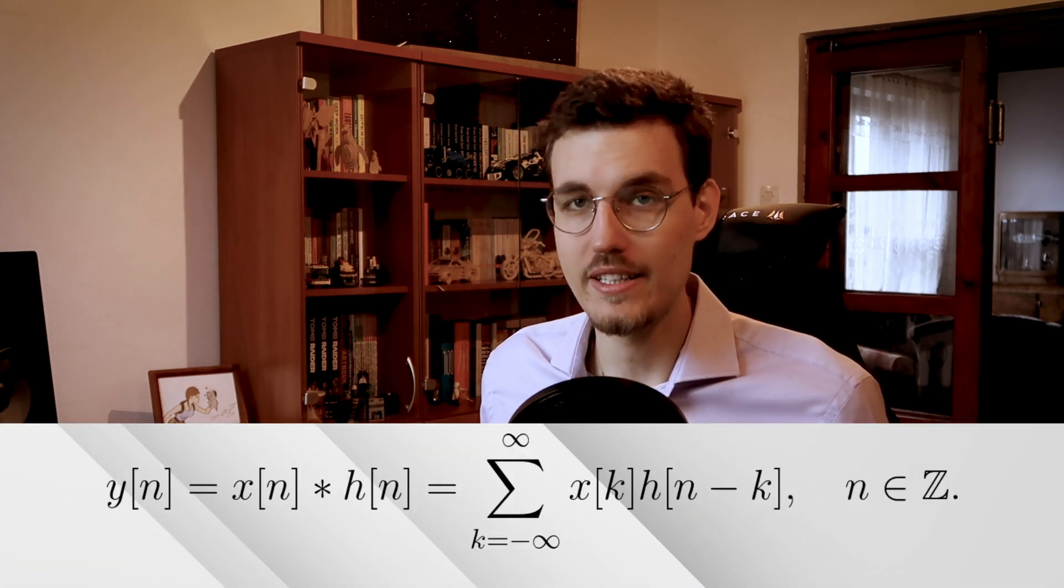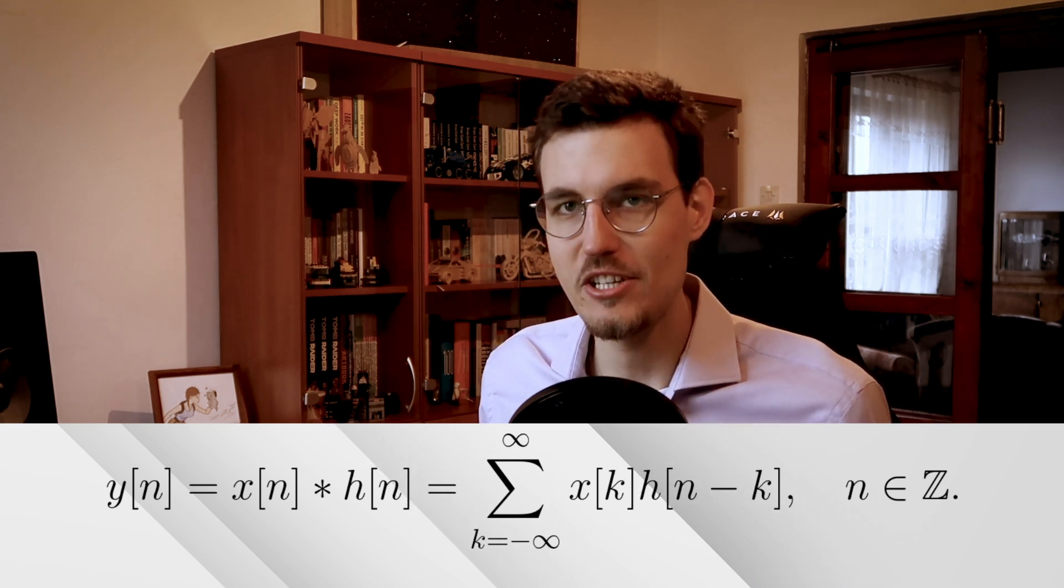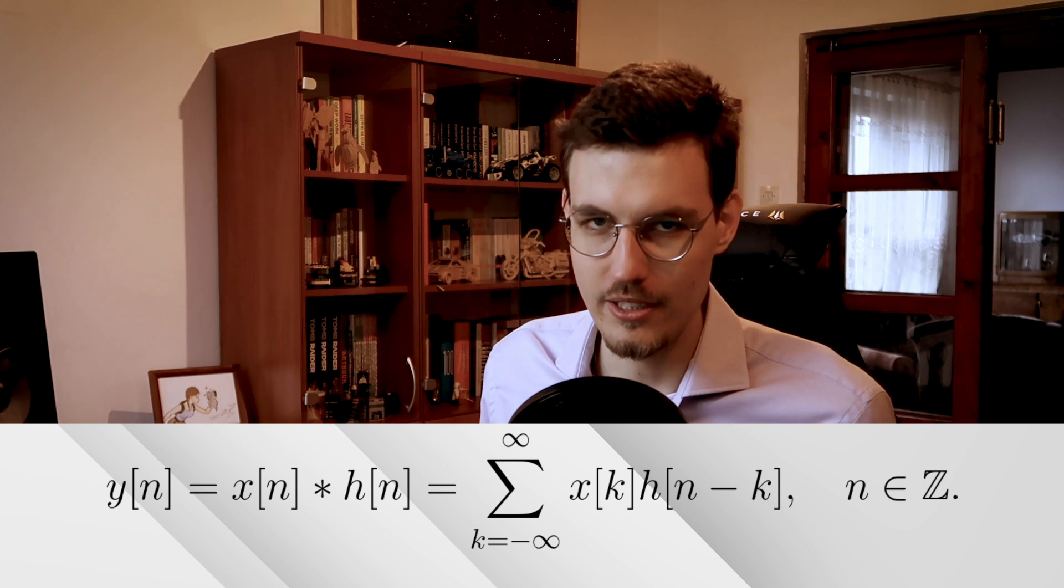Mathematically, convolution is defined as an infinite sum where X is the input signal, H is the impulse response, and Y is the output signal.